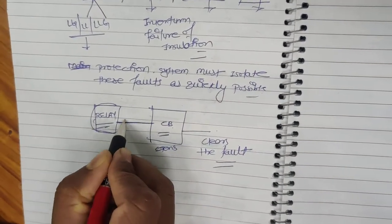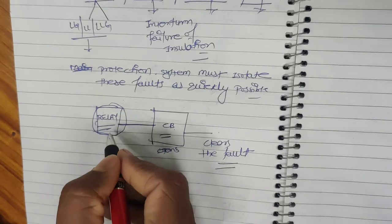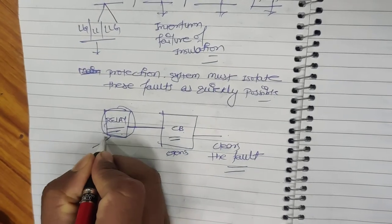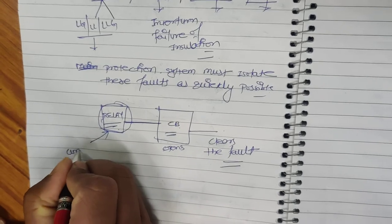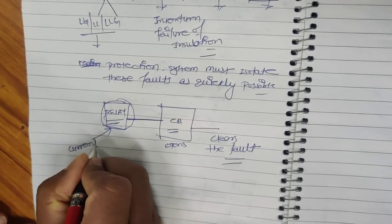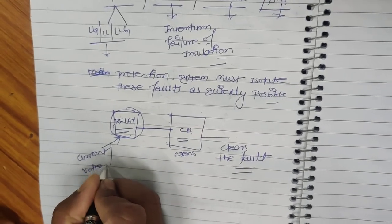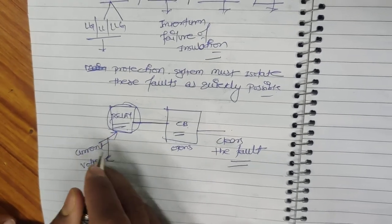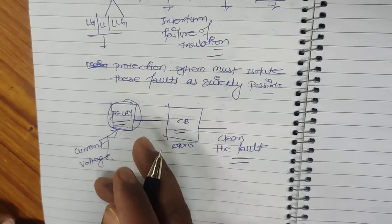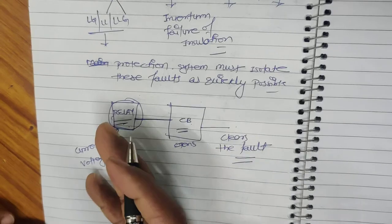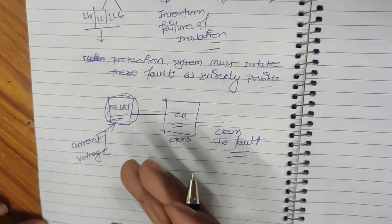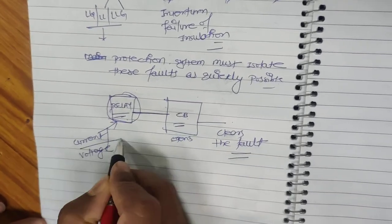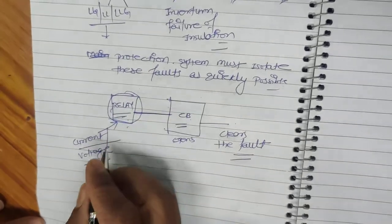The relay determines the fault on the basis of its algorithm. This algorithm may be based on current, voltage, or any combination of current and voltage — such as the ratio of voltage to current to form impedance, admittance, power factor, or power angle. There may be many different types of algorithms inside the relay.